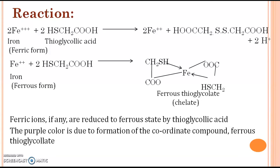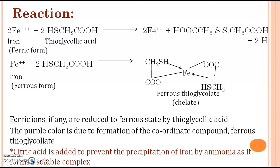This coordinate compound is formed by the reaction of ferrous ion with thioglycolic acid and has a purple color. One more thing to remember: citric acid is added to prevent the precipitation of iron by ammonia, as it forms a soluble complex. To avoid this insoluble precipitate, citric acid is added to prevent the reaction between iron and ammonia.